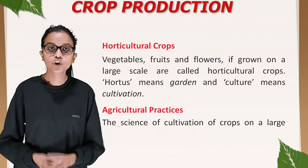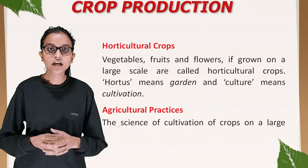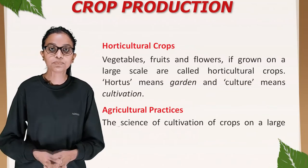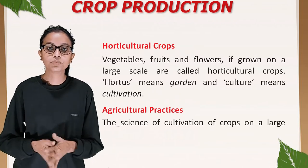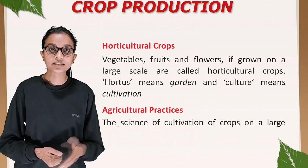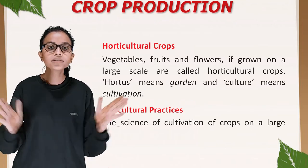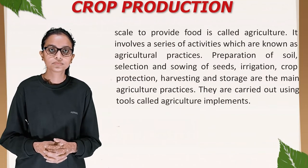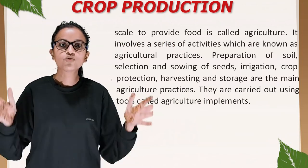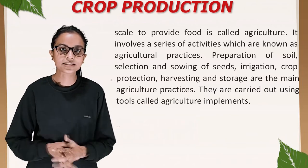Horticulture crops: vegetables, fruits, and flowers grown on a large scale are called horticulture crops. The word 'hortus' means garden and 'culture' means cultivation. The science of cultivation of crops on a large scale to provide food is called agriculture, and it involves a series of activities known as agricultural practices.